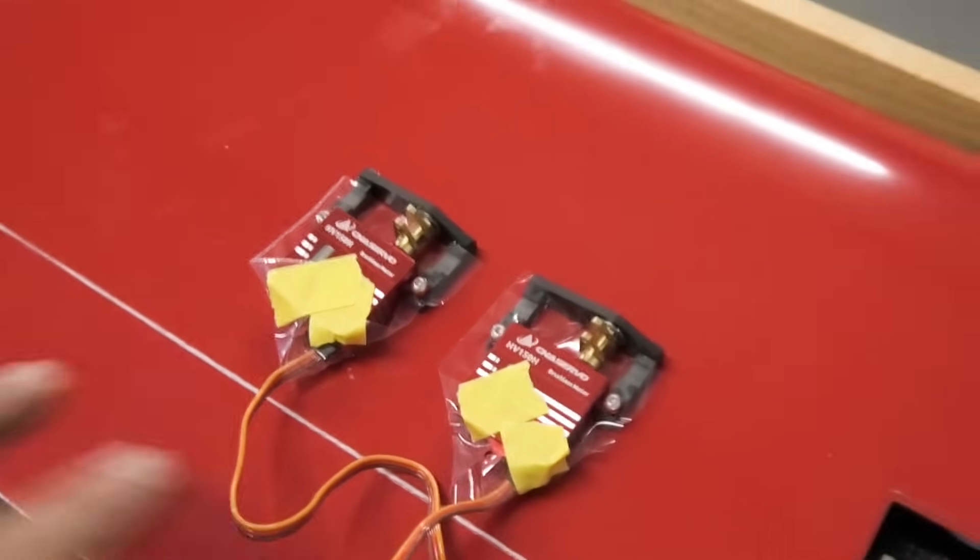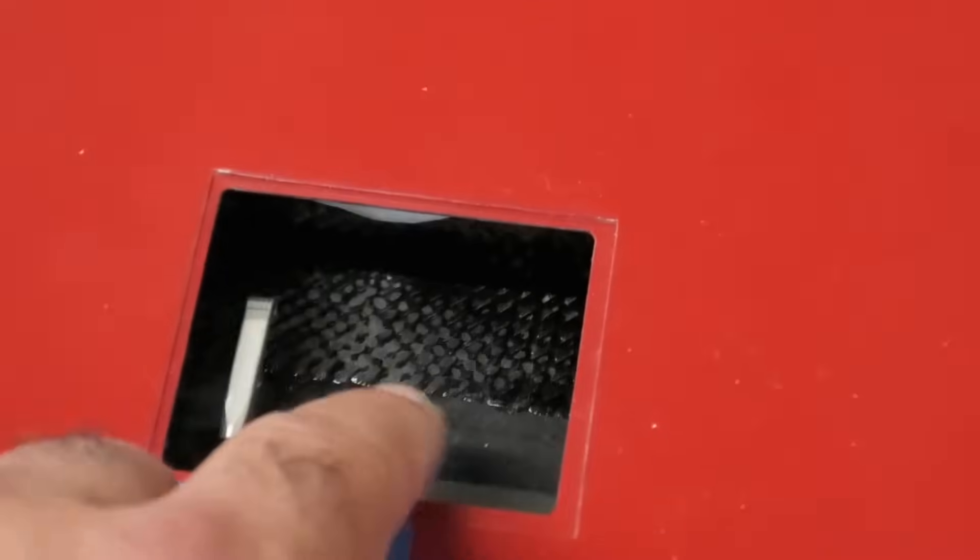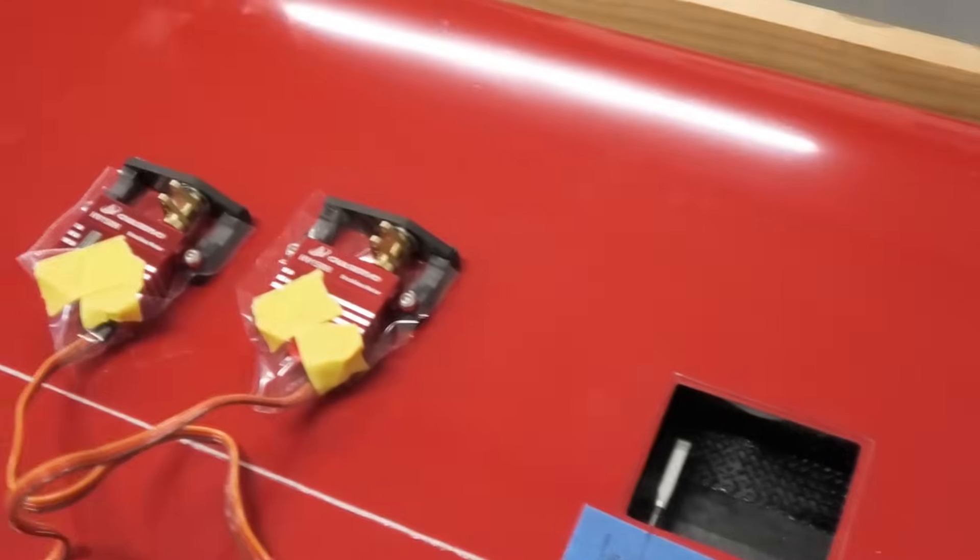I'm ready to go with these two servos and this wing panel. The frames are assembled and prepped, got some plastic protecting the servos from the epoxy. I've scuffed up the bay and cleaned it all out with alcohol and a vacuum.